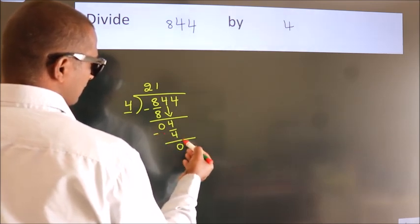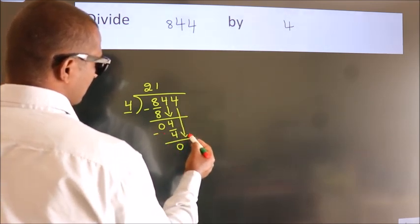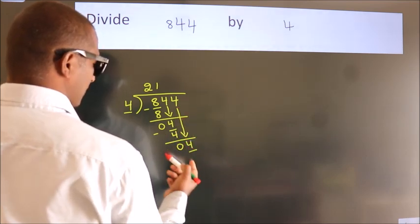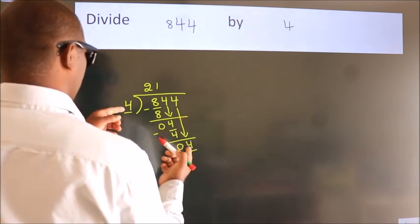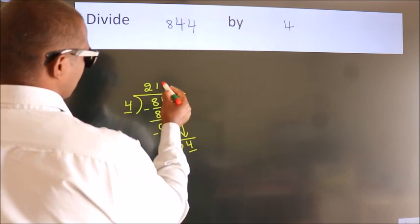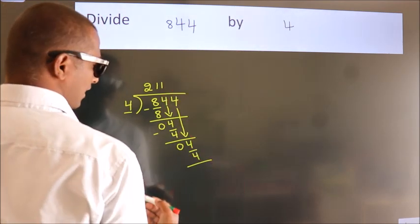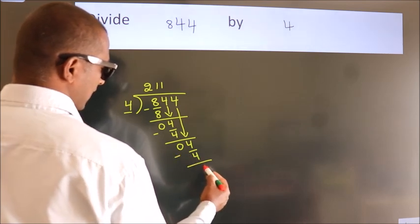After this, bring down the beside number. So 4 down. So 4. When do we get 4? In 4 table. 4 1s, 4. Now we subtract. We get 0.